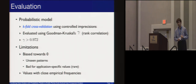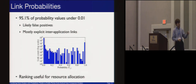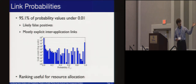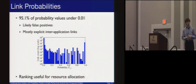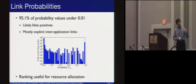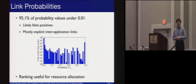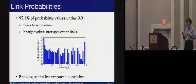The distribution of probability values — note the y-axis is log scale — shows over 95% of inferred probability values are under 0.01, making them likely false positives. If you exclude these in your client analysis, you lose some soundness but very likely lose little information. Many of these low-probability links are related to explicit inter-application links, corresponding to our insight that false positives should exist. Our ranking is therefore useful for resource allocation.